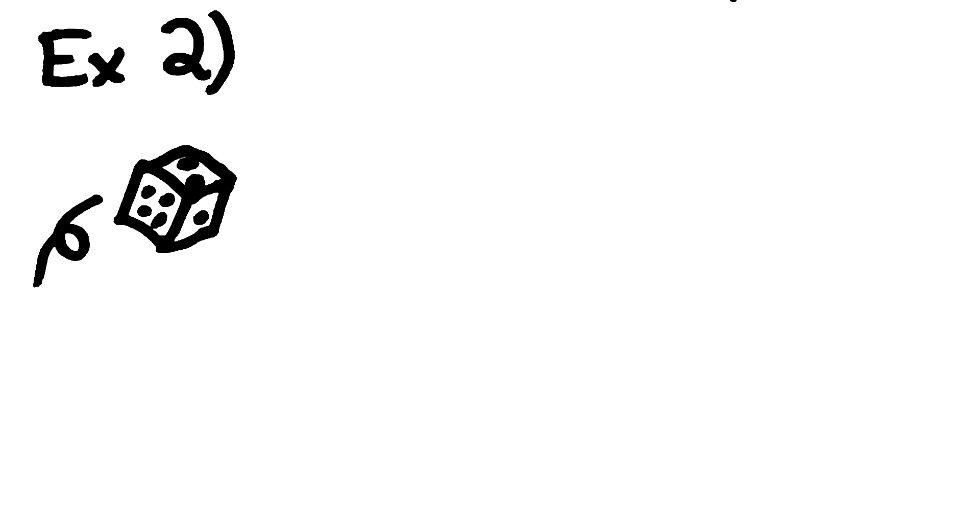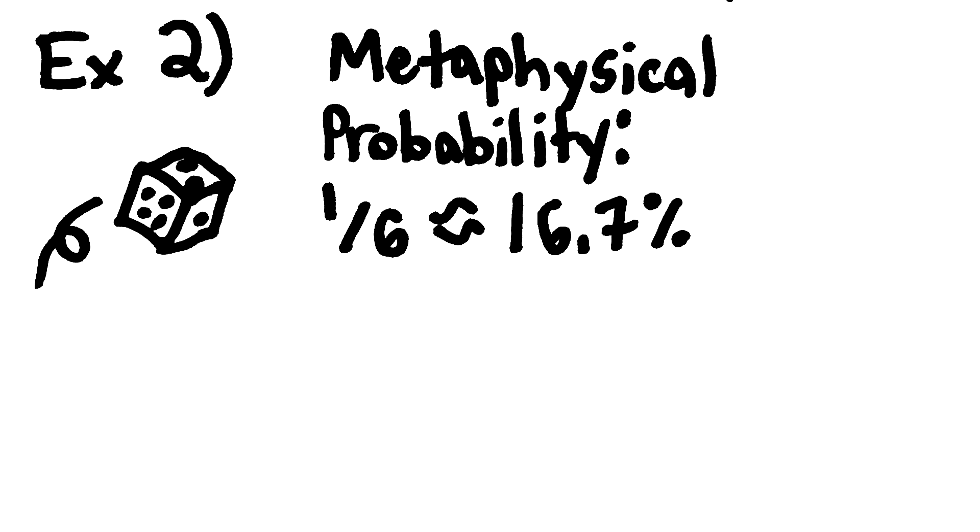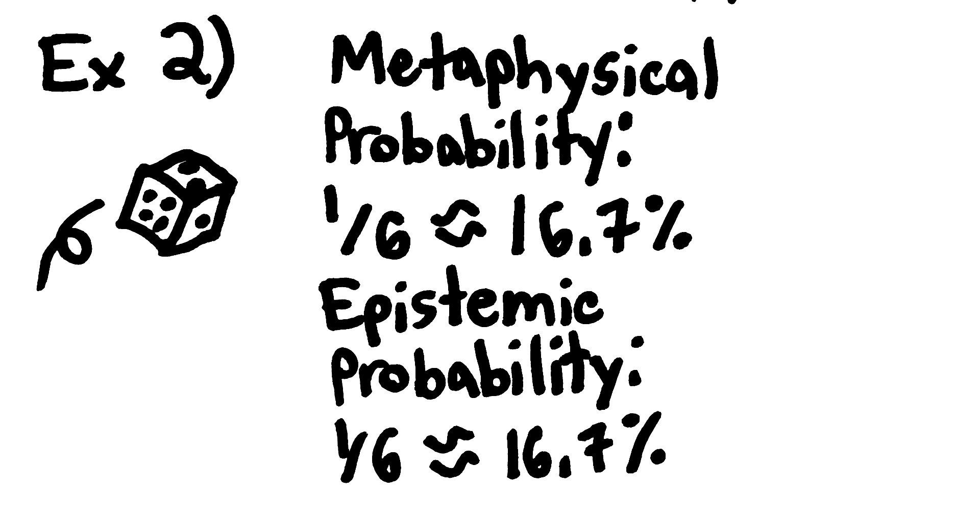A truly random dice is rolled. Will it land on 6? The metaphysical probability of this is 1 in 6. The epistemic probability of this, assuming you can't see the future, is also 1 in 6. If you understand the metaphysical probability, that's also your epistemic probability.